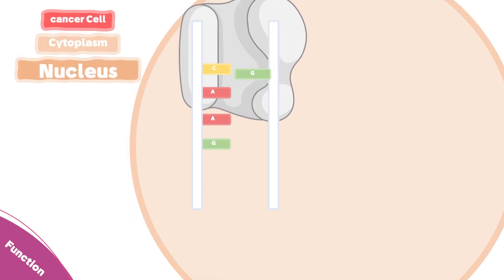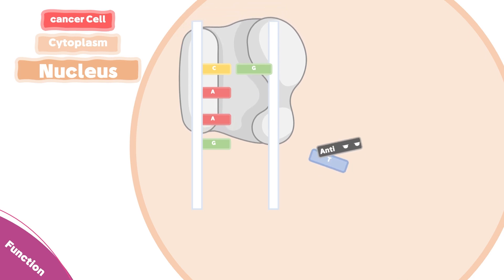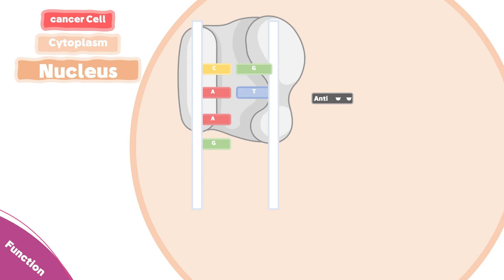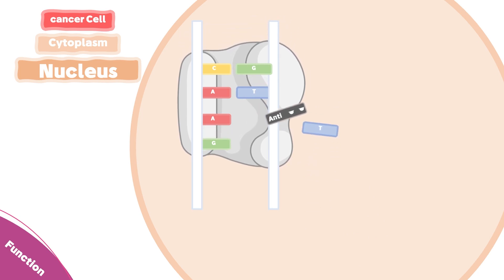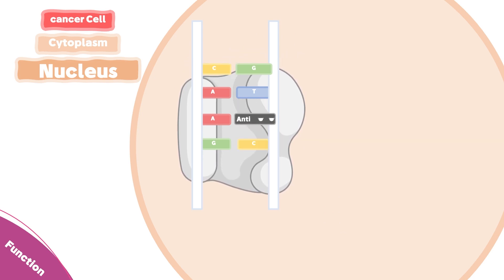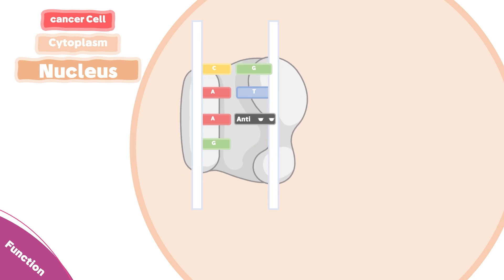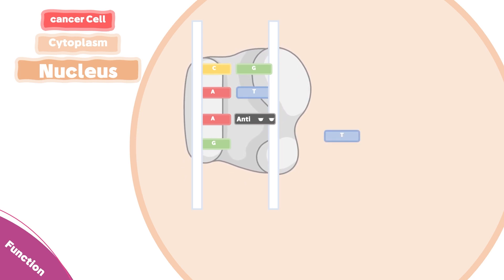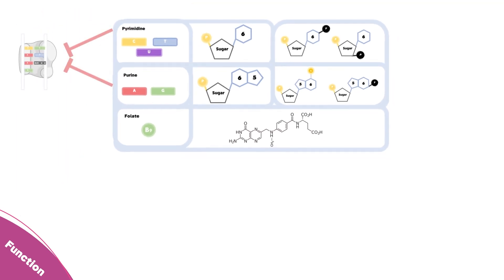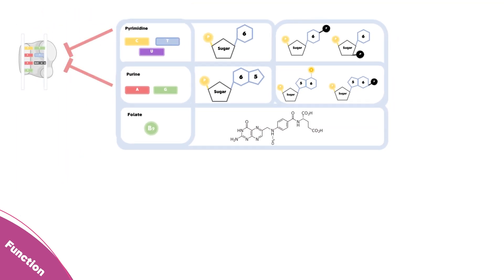Now let's move to the function. During DNA replication, the DNA polymerase inserts the complementary bases opposite to each nucleotide in the template strand. The anti-metabolites can be mistakenly inserted into the DNA strand, leading to either a deformation of the DNA structure or a complete arrest of the polymerase, depending on the type of anti-metabolite.